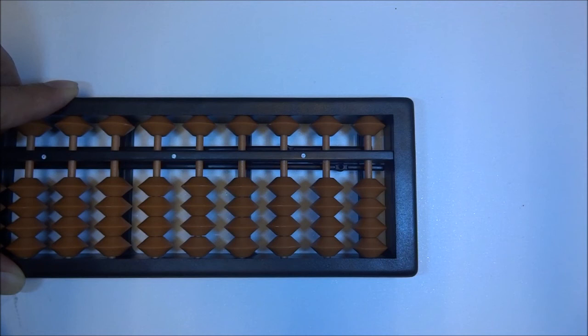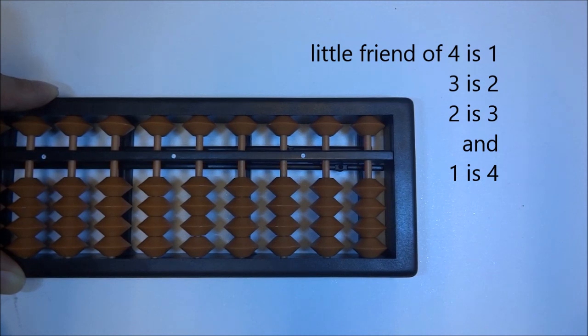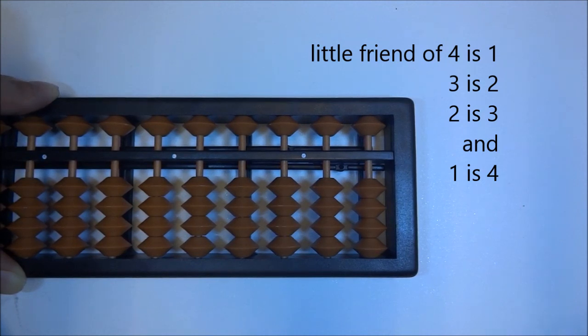So I hope you understand this concept well of complements. Throughout the remainder of the video and the following videos, we're going to use the terminology, little friend. And so we want to make sure that you remember really well. The little friend at the base level 5, with the ranges 1 through 4. So little friend of 4 is 1. Little friend of 3 is 2. Little friend of 2 is 3. And little friend of 1 is 4.